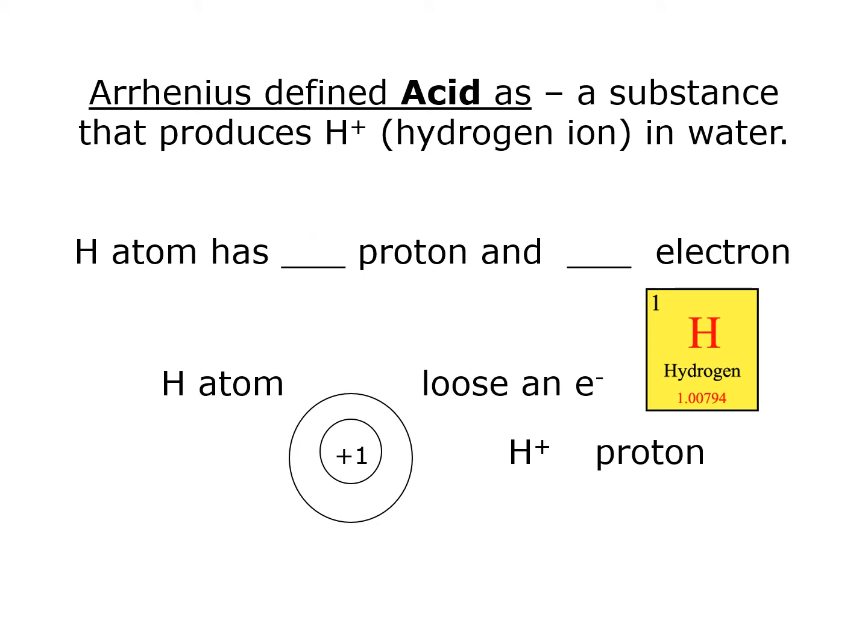In 1884, a Swedish chemist, Svante Arrhenius, defined an acid as a substance that produces hydrogen ions when you put that substance in water. So let's review.